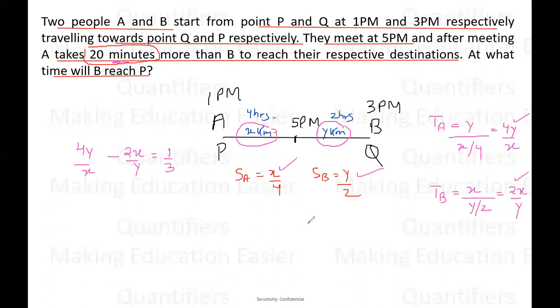Now students, just look at the equation. Can I say Y by X and X by Y, they are reciprocal of each other. So let's assume Y by X to be some variable. Let's say this is equal to T. So from here students, you will get a quadratic equation: 4T minus 2 by T is equal to 1 by 3. Now if we solve it, we'll get 3 times 4T squared minus 2 should be equal to T. Further, if we simplify, we get 12T squared minus T minus 6 is equal to zero.